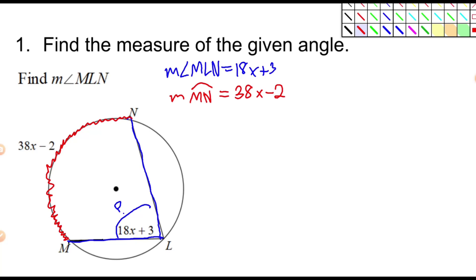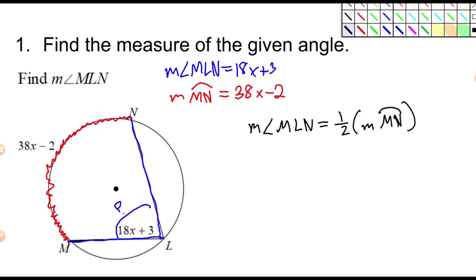We know an angle and we know the arc, and that's an inscribed angle with its intercepted arc — so those go together, there's a relationship there. The measure of angle MLN is equal to one half the measure of arc MN. The blue angle is equal to half of the red arc. Now we just do a little substitution: 18X plus 3 equals one half of (38X subtract 2). And there's my math equation.